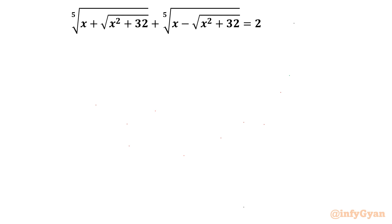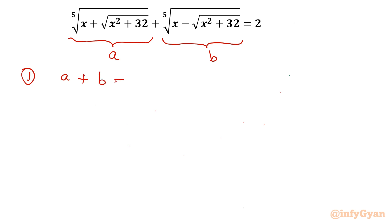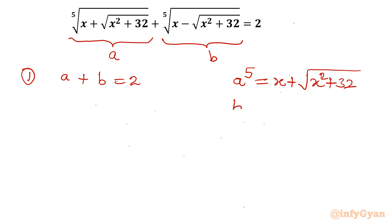Let's get started by writing our substitution. I will consider the very first term — the fifth root — as 'a', and the second term as 'b'. So a⁵ equals x plus square root of (x² plus 32), and b⁵ equals x minus square root of (x² plus 32).